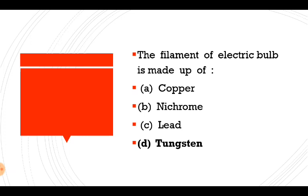Metal with the highest melting point is tungsten. Metal with the lowest melting point is mercury. Metal with the highest density is osmium. Metal with the lowest density is lithium. Metal with the highest electrical and thermal conductivity is silver.